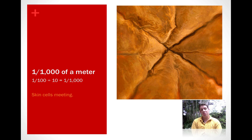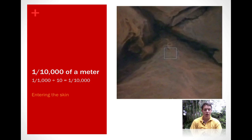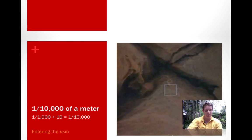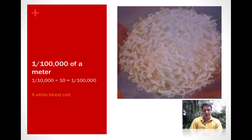We take 1/1000 of a meter and divide that by 10. Well, we're down to 1/10,000 of a meter, and we're almost ready to enter the man's hand. We take 1/10,000 of a meter, divide that by 10, we get 1/100,000 of a meter. And we're now so zoomed in, so close, we can see a white blood cell all by itself.